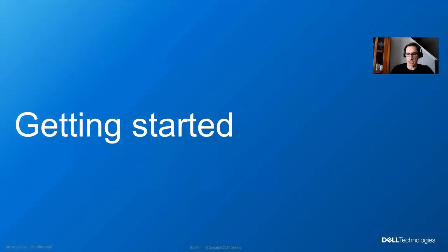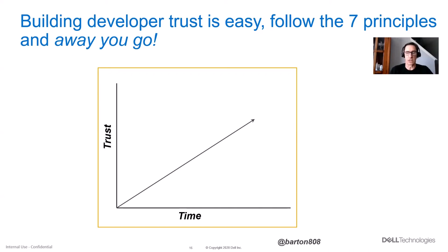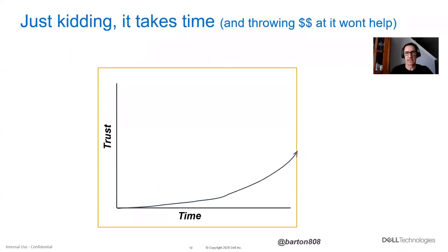Now getting started — obviously, building developer trust is easy. And if you want to go faster, you just throw money at it and the slope goes way up. Just kidding. It takes time. Even these great seven principles won't accelerate things that dramatically, and throwing money at it is not going to work. You need to keep at it, be steady, and build trust.